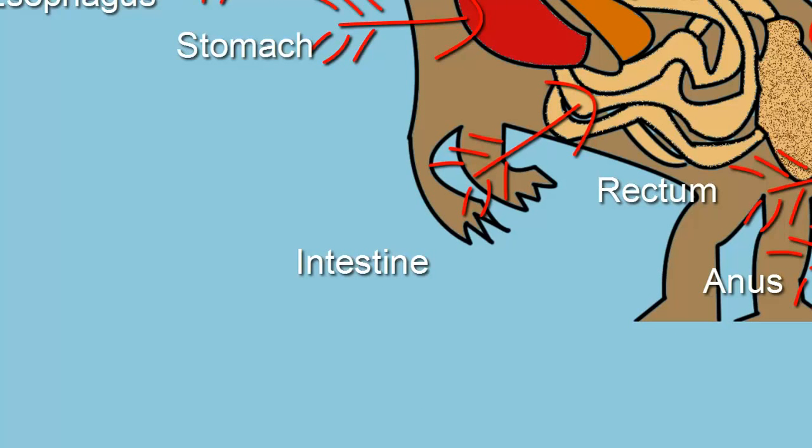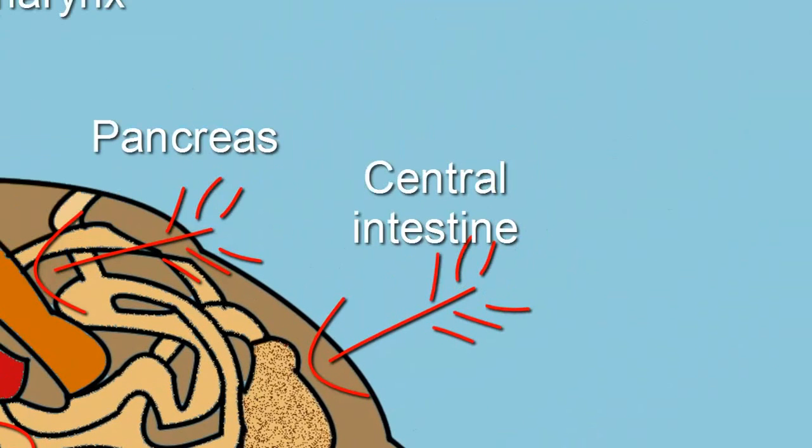This animal has only one intestine. This intestine carries waste for the entire body. The central intestine is a particular part of this animal. It can store waste for a long time in the body.